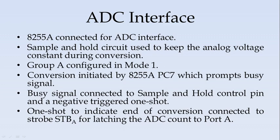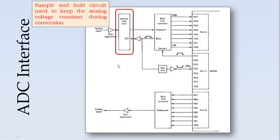The ADC conversion is initiated — the start of conversion is initiated by the 8255A Port C, pin 7, which also prompts the BC signal. The BC signal indicates the conversion process is happening. Whenever the ADC conversion is happening, this BC signal is connected to the sample and hold circuit control pin to maintain constant voltage. At the end of the BC signal, it is connected to a negative-triggered one-shot to indicate the end of conversion. When this end of conversion happens, it will be used for strobing the ADC count to Port A. This is the sample and hold circuit, which is used to keep the analog voltage constant during ADC conversion.